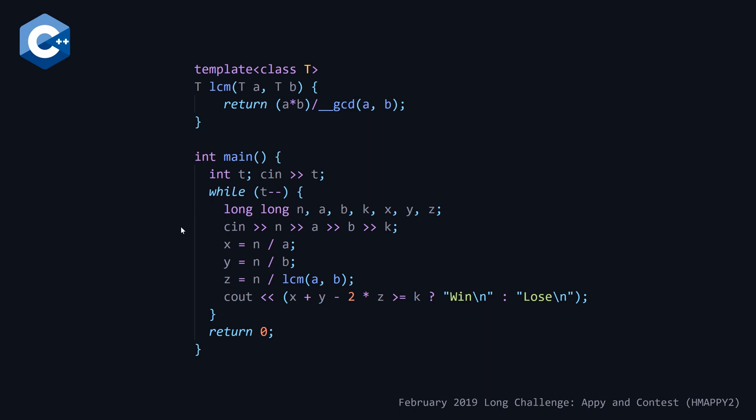And for our solution, we're reading in t the number of test cases. And then for each test case t, we're reading in n, a, b, and k. And then I've also defined x, y, and z, which are going to be the components of our formula. So x is equal to n divided by a, y is equal to n divided by b, and then z is equal to n divided by the LCM of A and B. And then based on whether x plus y minus 2 times z is greater than or equal to k, we either output win or lose. And that's it.